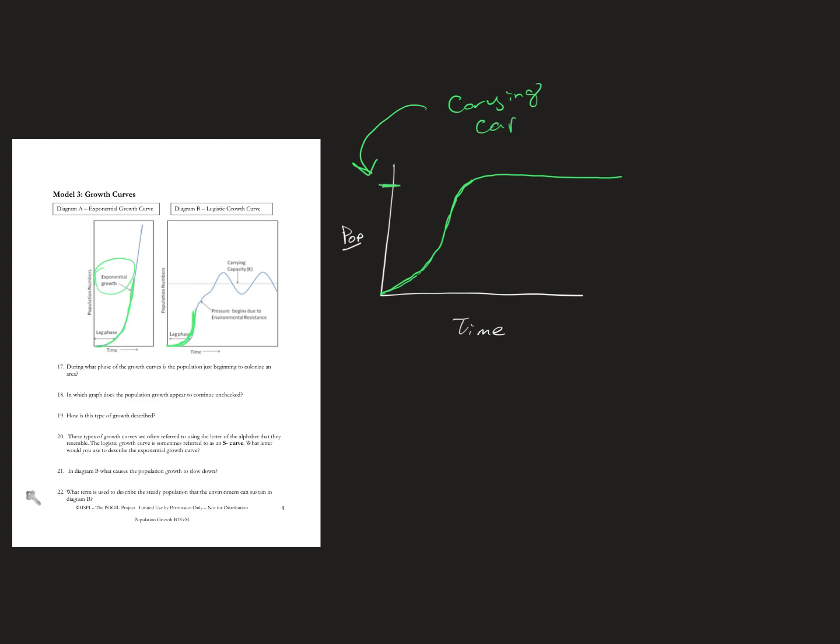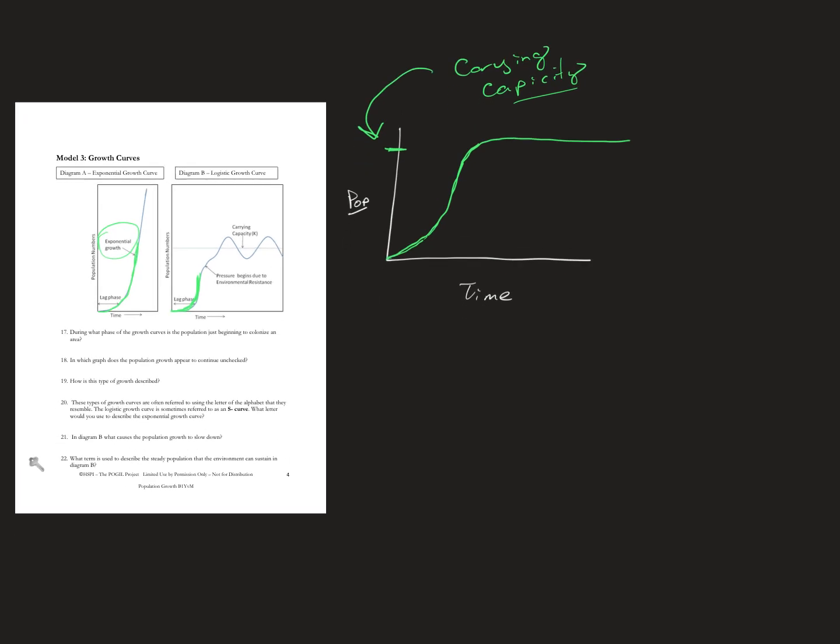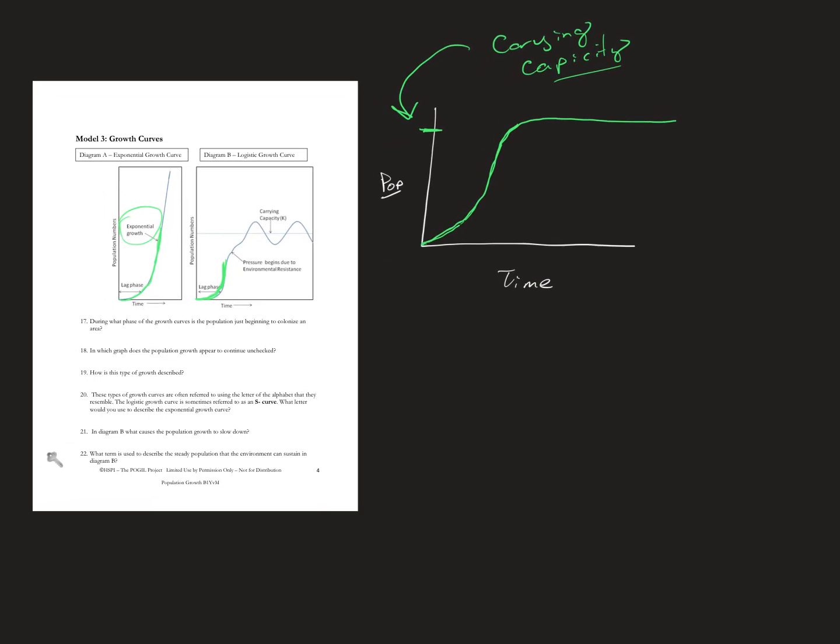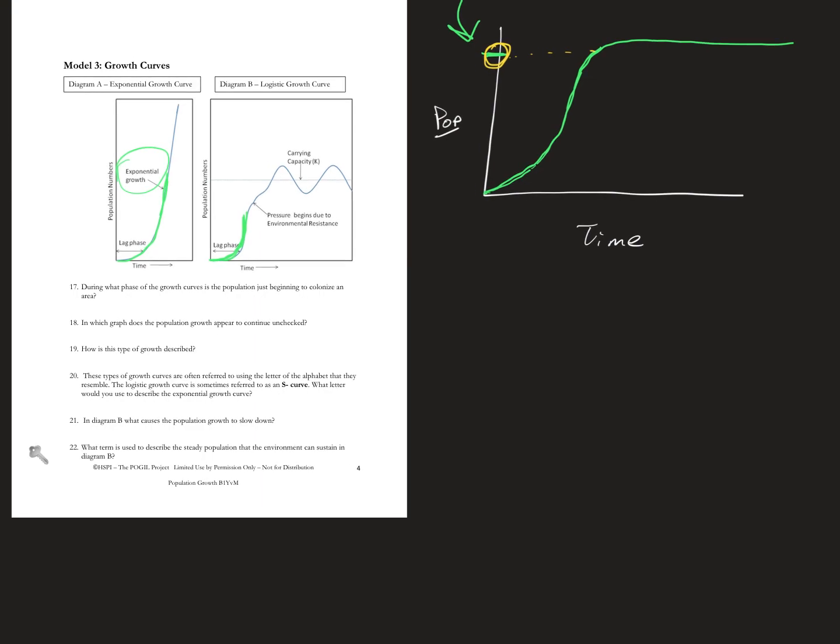The maximum, the maximum population each space can hold over time. Now, this is an idealized curve. Notice how smooth these lines are. And if you can extend the line pretty easily from this number to there. And the number here, this population number is the carrying capacity.